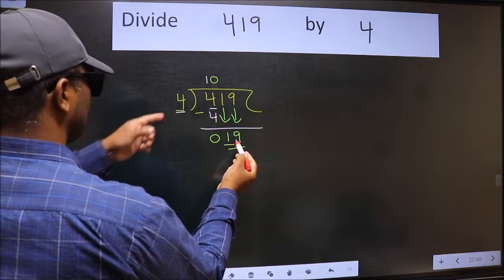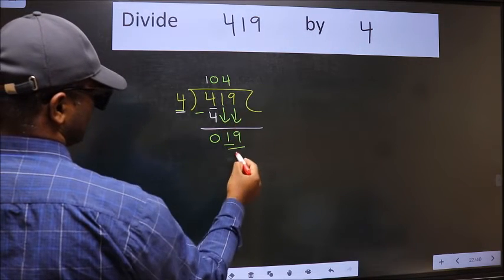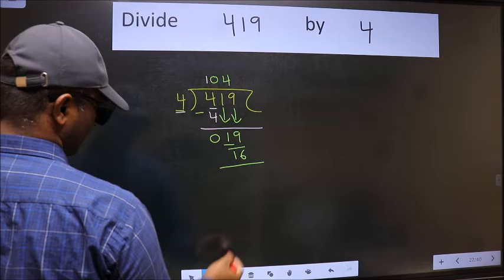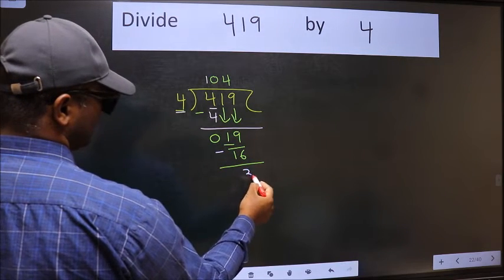A number close to 19 in the 4 table is 4 fours is 16. Now we should subtract. We get 3.